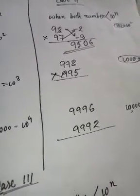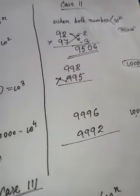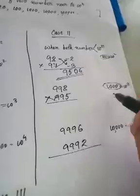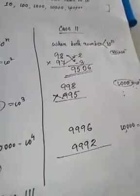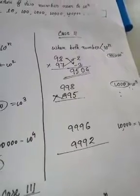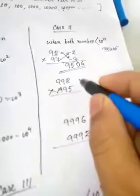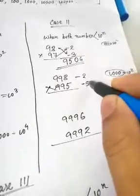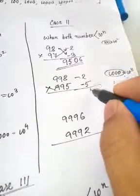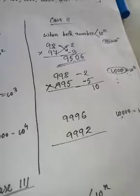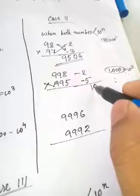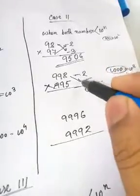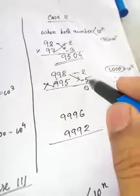Now you can see the answer. You can see that 1000 is the base. So we know that 1000 is the base. As a result, it will be minus 2 and minus 5. Then the number is 1000 minus 2, which is 998 from 1000.